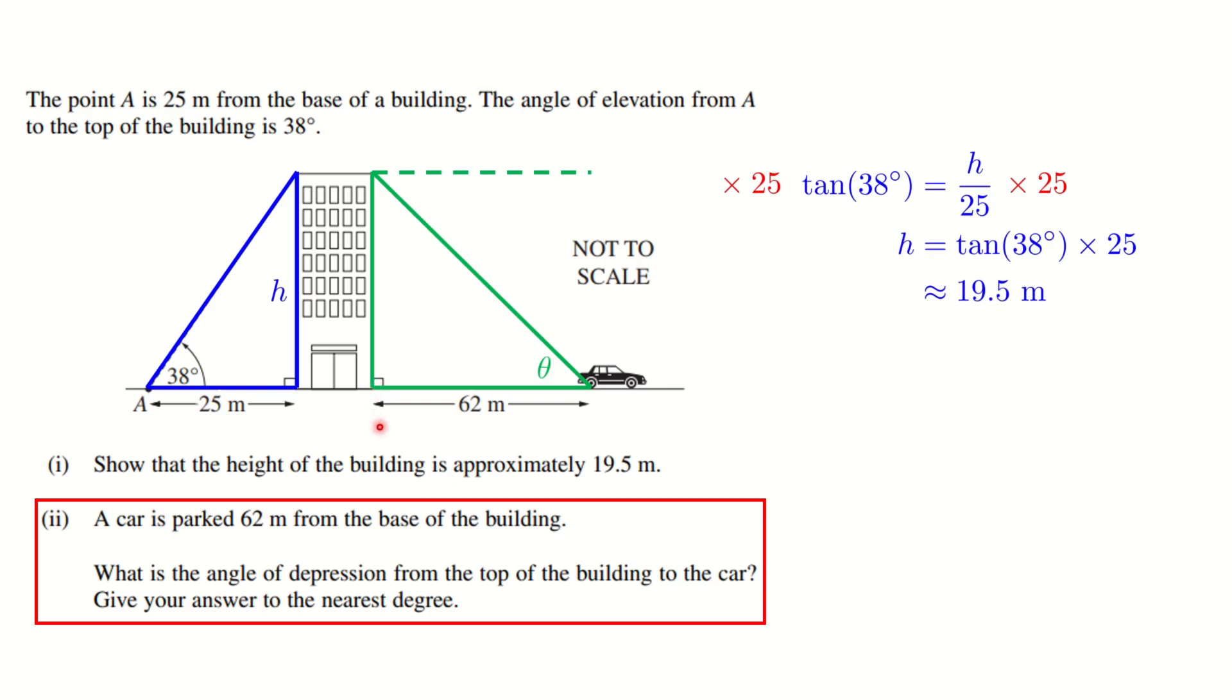Okay, so how's that useful? Well, to work out the angle we've got to have two sides. We have the 62 given to us, but we also worked out in the first part that the height of the building is about 19.5, and so we can use that now.